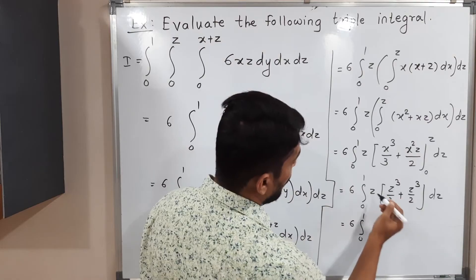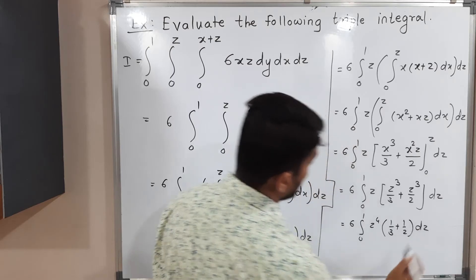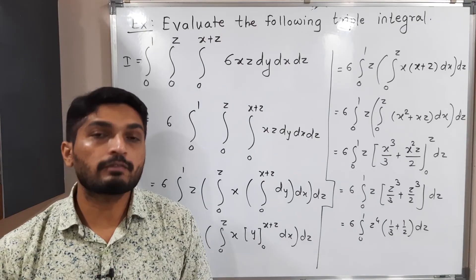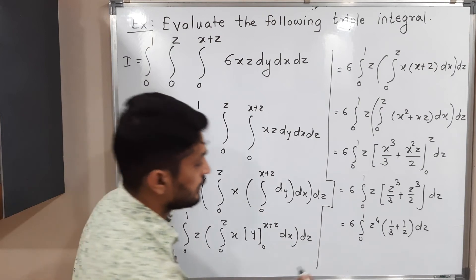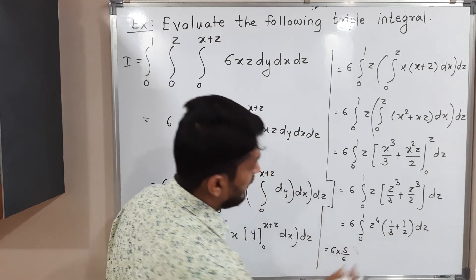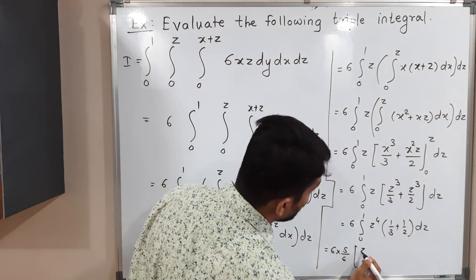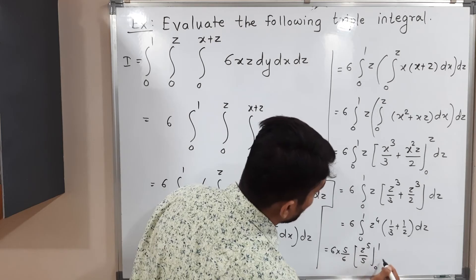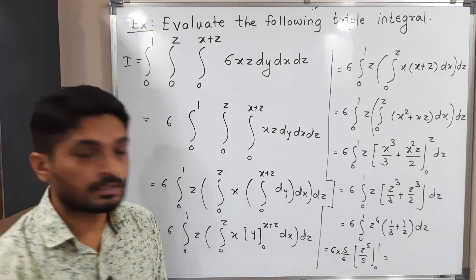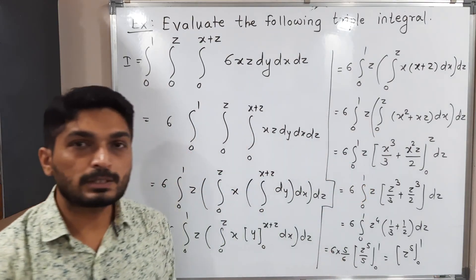Taking z cubed common gives z to the power 4 times (1/3 plus 1/2) dz. Now 1/3 plus 1/2 = 5/6, which is a constant we can take outside. So we have 6 times 5/6 times the integration of z to the power 4. The integration of z to the power 4 is z to the power 5 by 5, with limit 0 to 1. The 6 and 6 cancel, and the 5 and 5 cancel, leaving simply z to the power 5 with limit 0 to 1.